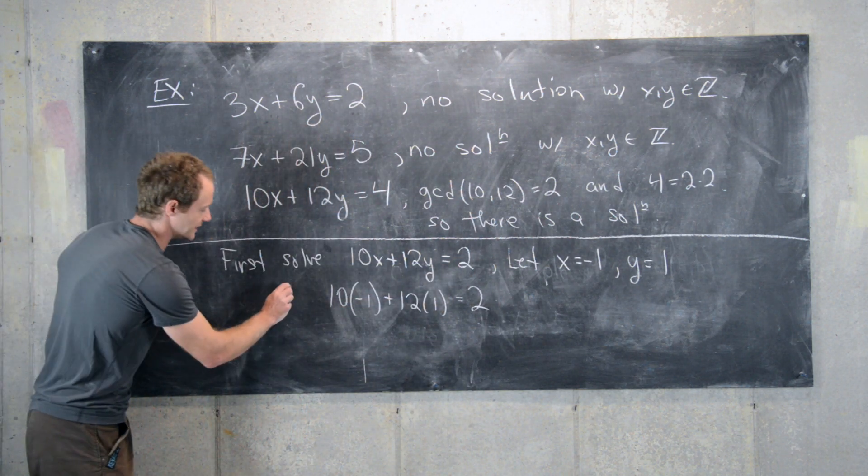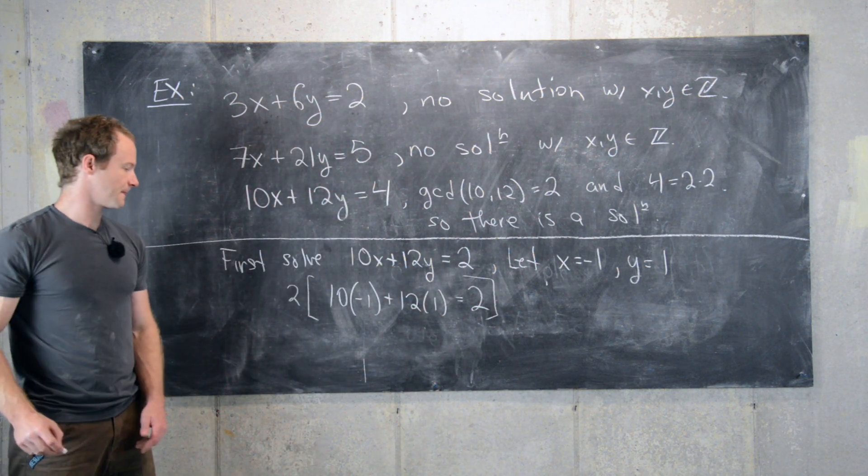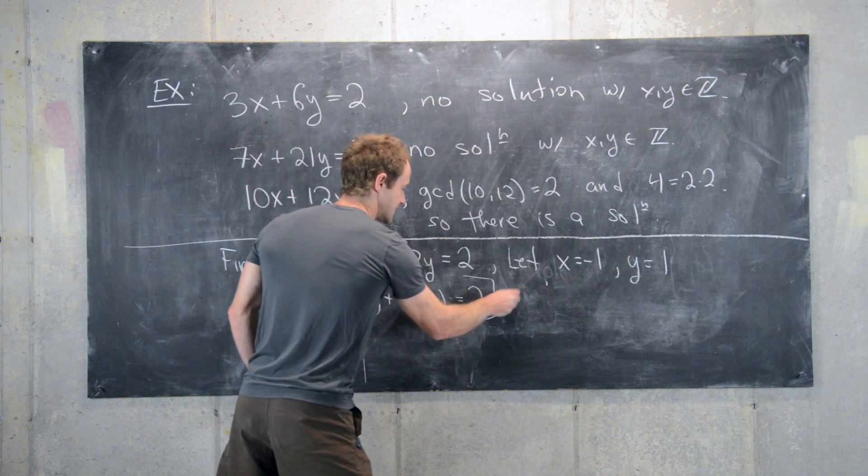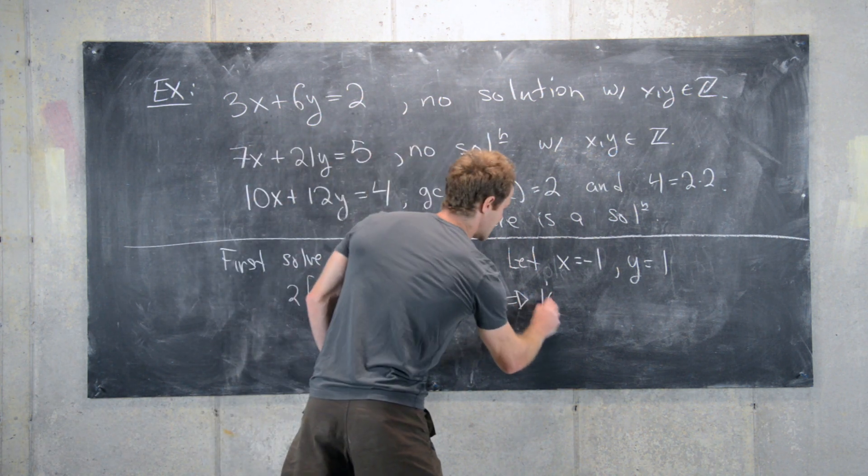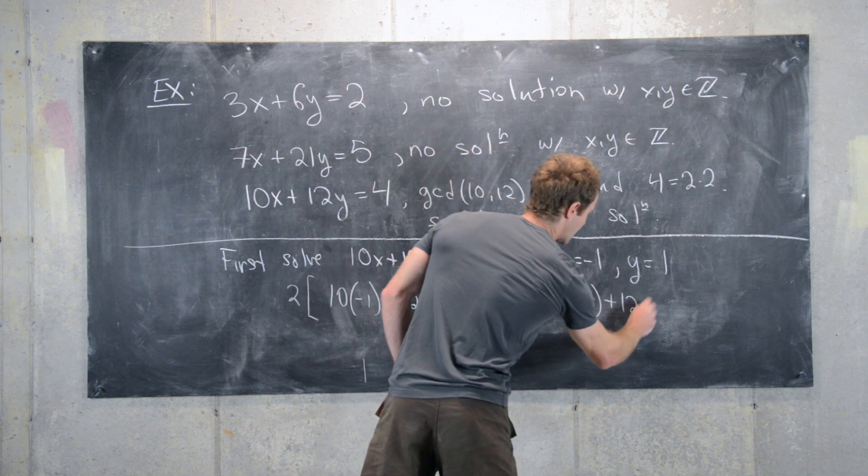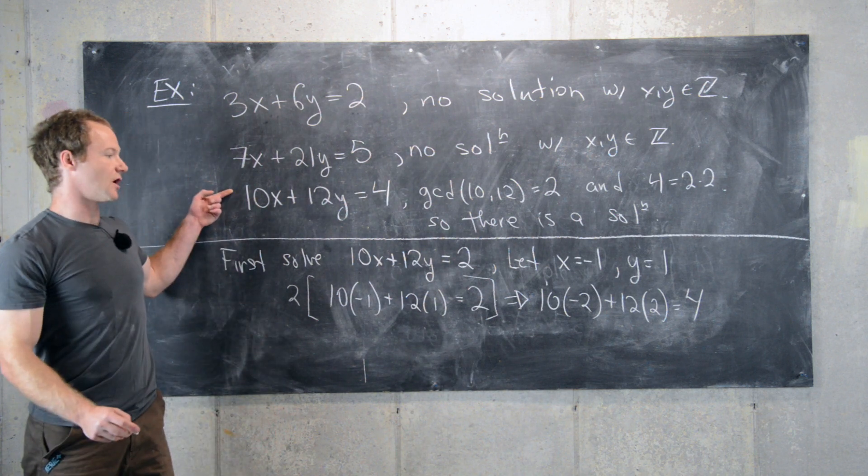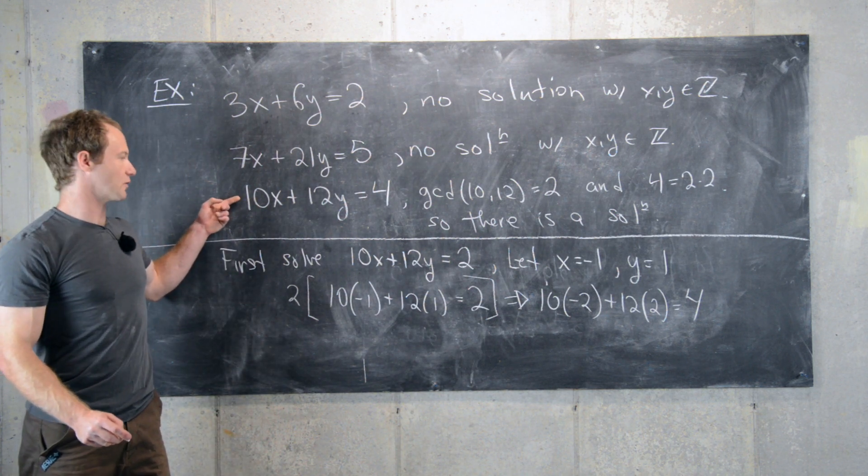Now what we can do is multiply this entire equation by 2. That's going to give us 10 times negative 2 plus 12 times 2 equals 4. And so we've solved the equation that we wanted originally.